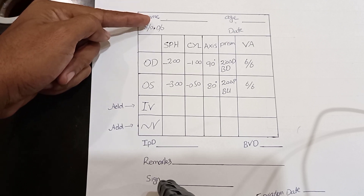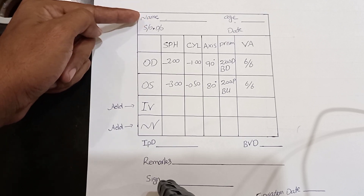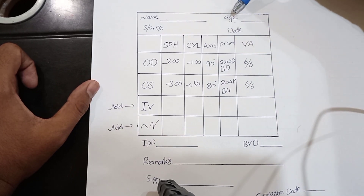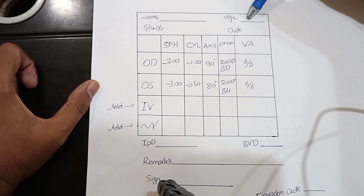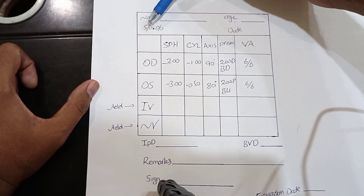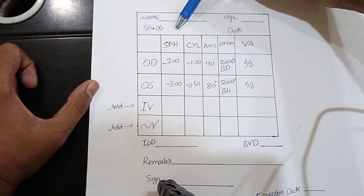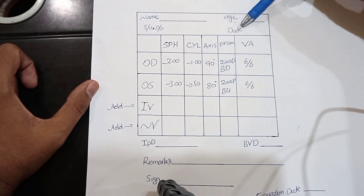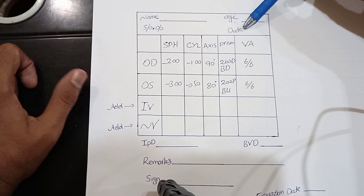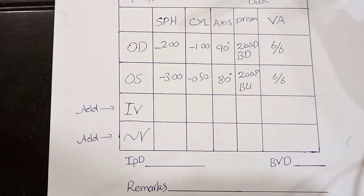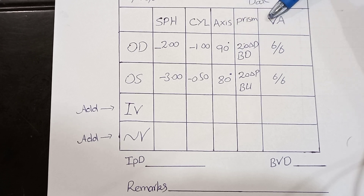Now let's look at the layout of a prescription card. First there is a box for the patient's name, then the age — which is really important. There is also a box for the guardian (son of, daughter of, or wife of), and importantly the issuance date. Then we have boxes for spherical, cylindrical, axis, prism, and visual acuity corrections.